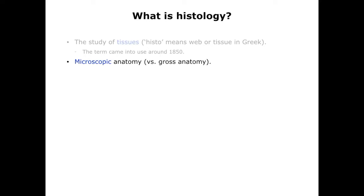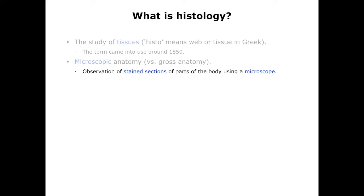Today, microscopy includes many tools, such as an electron microscope. This introduction will only consider some basics of light microscopy, however. In practice, histology is the observation of stained sections of parts of the body using the microscope. Thin sections of body parts are required in order to be able to shine light, or electrons, through them so you can see something. And stains are required because most biological material is colorless — you need stains to create contrast between different components.